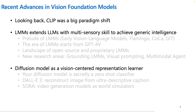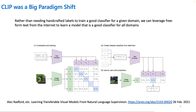Large multi-modal models extend large language models with multi-sensory skills such as visual understanding to achieve stronger generic intelligence. We also want you to pay close attention to diffusion models — not only from the perspective of image and video generation, but also as a vision-centered representation learner. CLIP was a big paradigm shift because rather than needing handcrafted labels to train a good classifier, which is very time-consuming, we can leverage free-form text from the internet to learn a model that is simultaneously a good classifier for all domains.